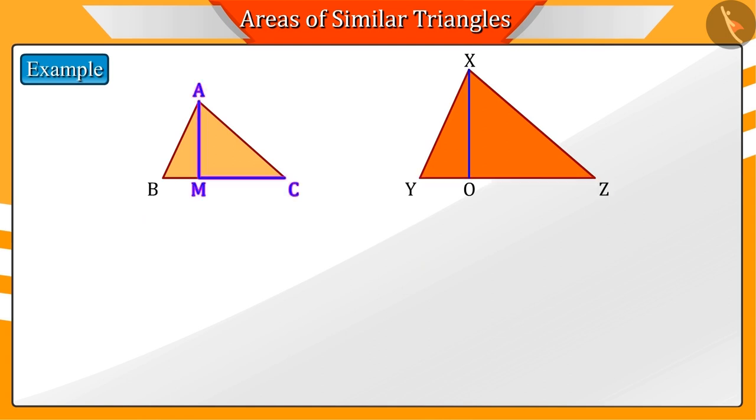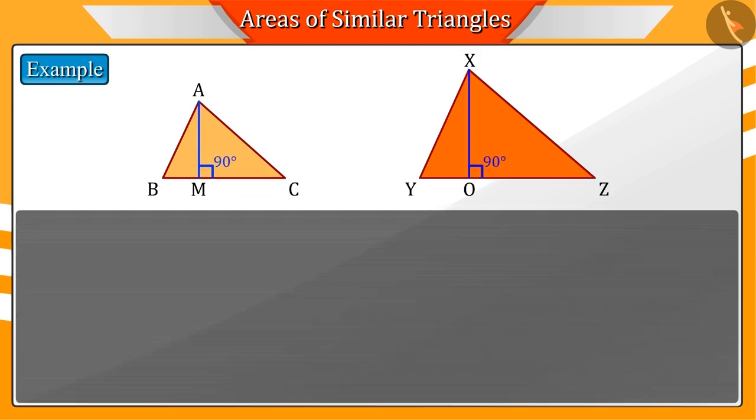Can you tell the measure of angles AMC and XOZ? Correct. Since AM and XO are the altitudes of the triangle, the angles AMC and XOZ will be 90 degrees.